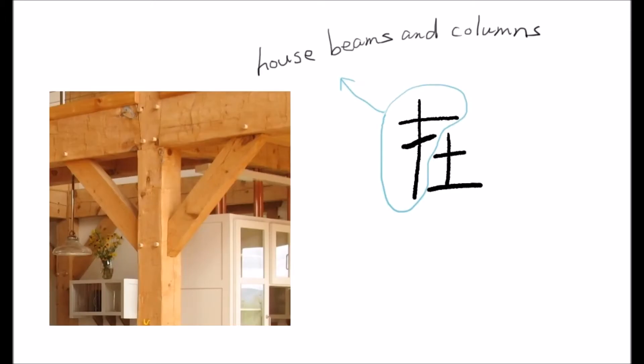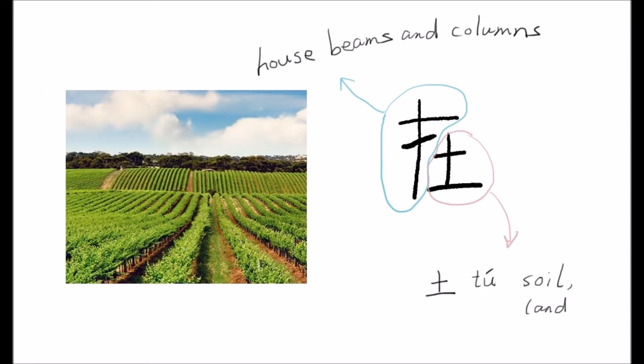The left part refers to the beams and columns, which represents the house. The right part is 土, which represents the land.